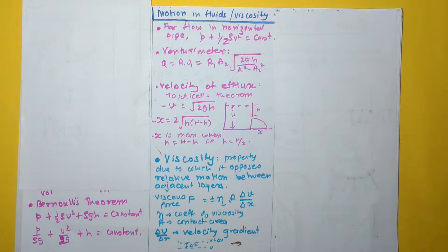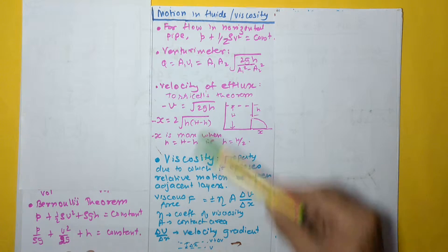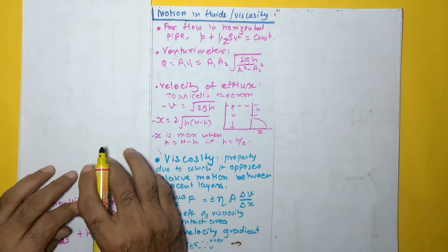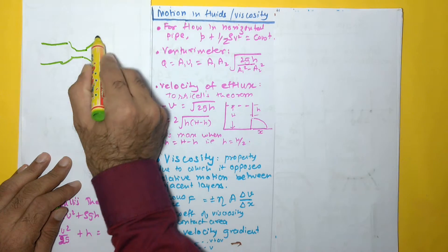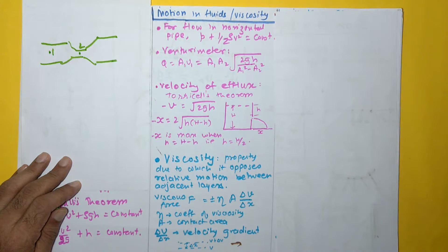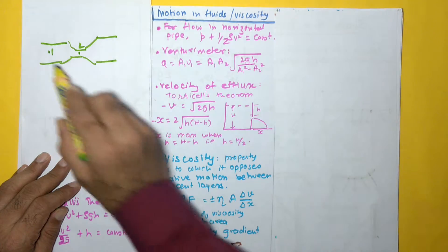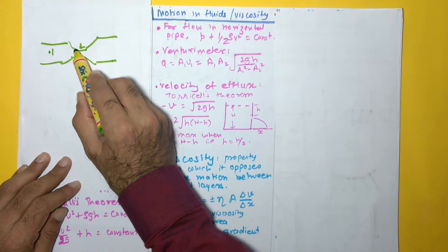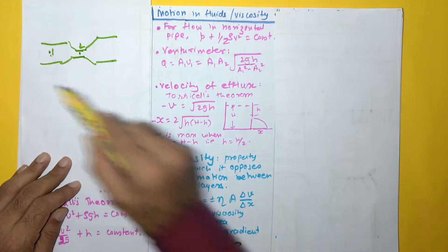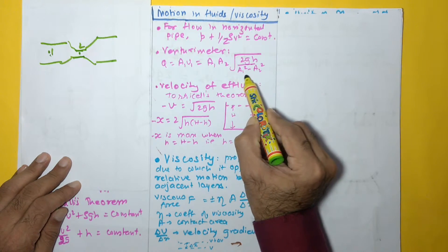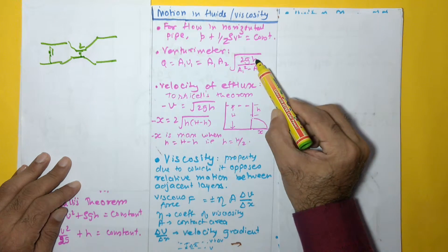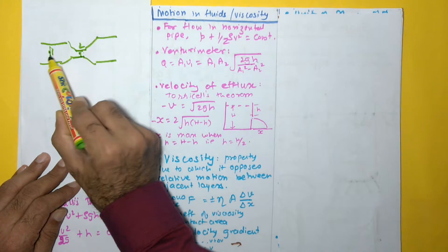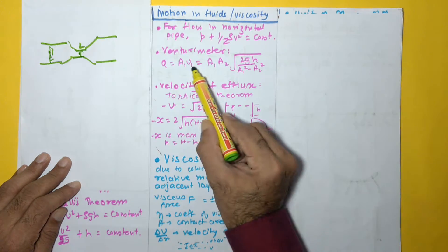Next we discuss how to measure volume flow rate. One device used for this is the Venturimeter, which has a pipe whose diameter decreases. The flow rate at location 1 can be obtained by the formula: Q = A1·A2 × √(2gh) / √(A1² − A2²), where A1 and A2 are the cross-sectional areas at the two locations and h represents the pressure difference between them.